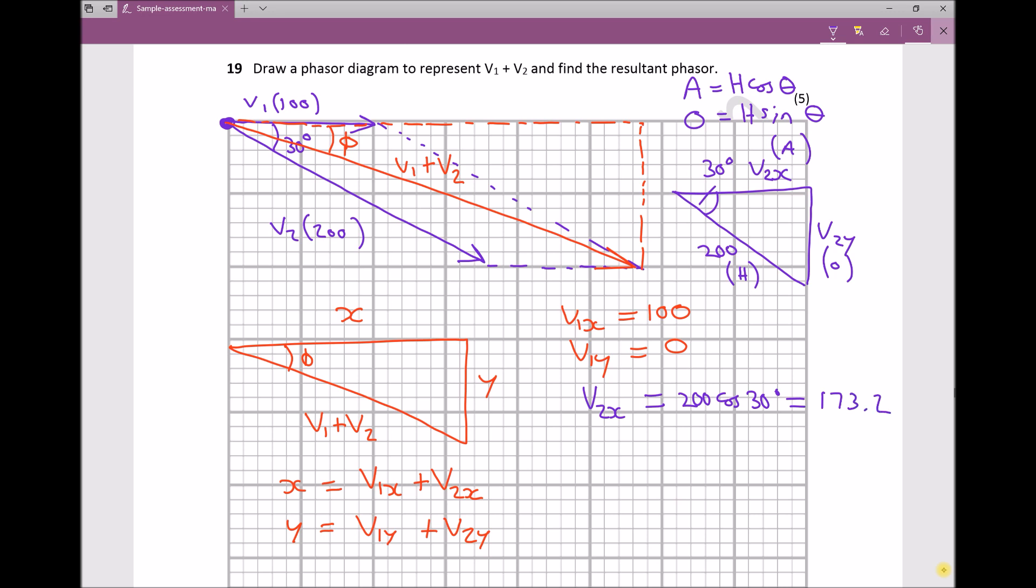Next, we find V2y. V2y is the opposite, and opposite equals hypotenuse sin theta. Our hypotenuse is 200, theta is 30, giving us a y component of V2 equal to 100.